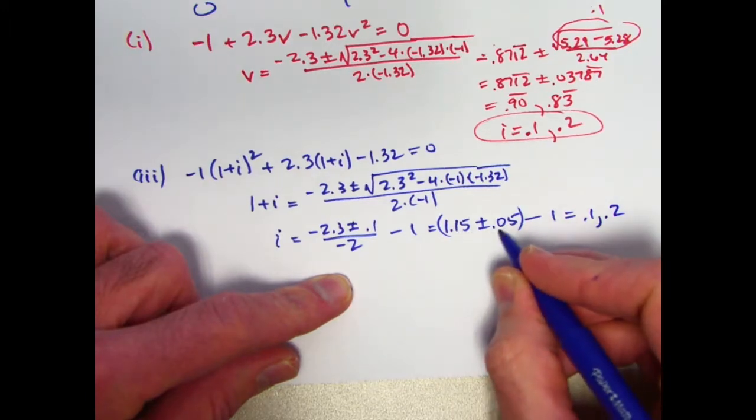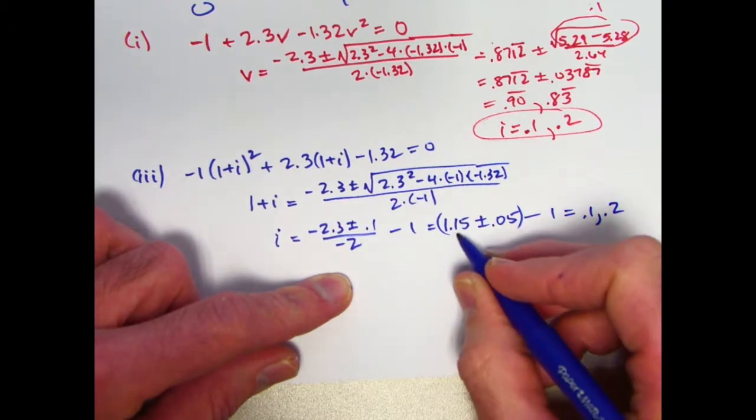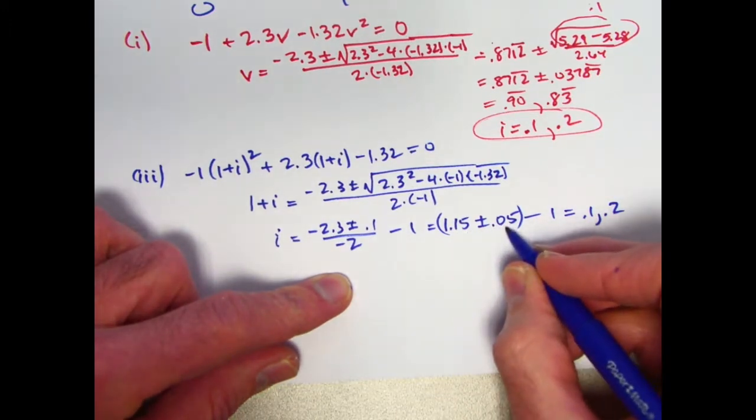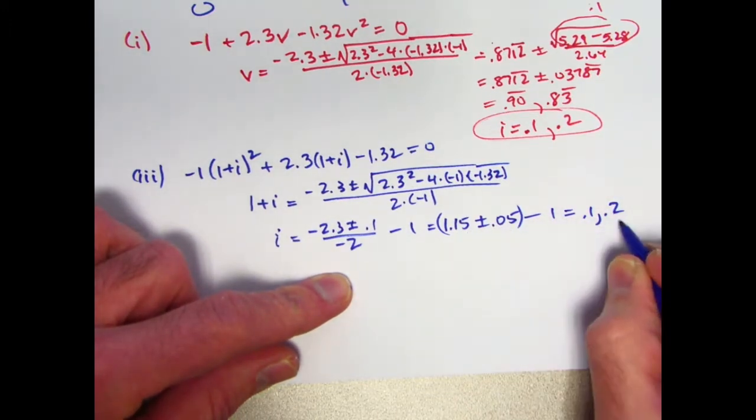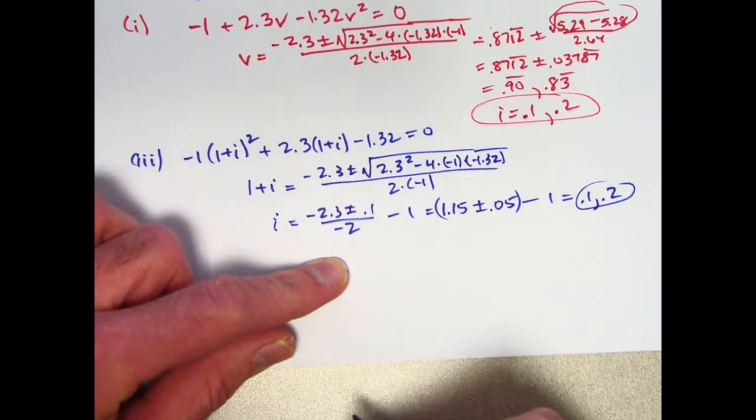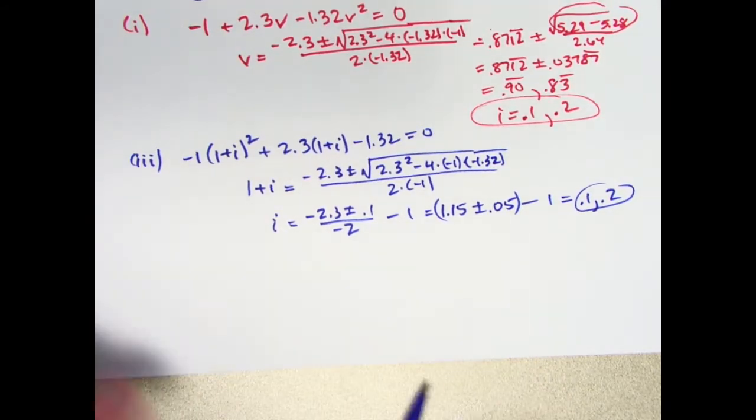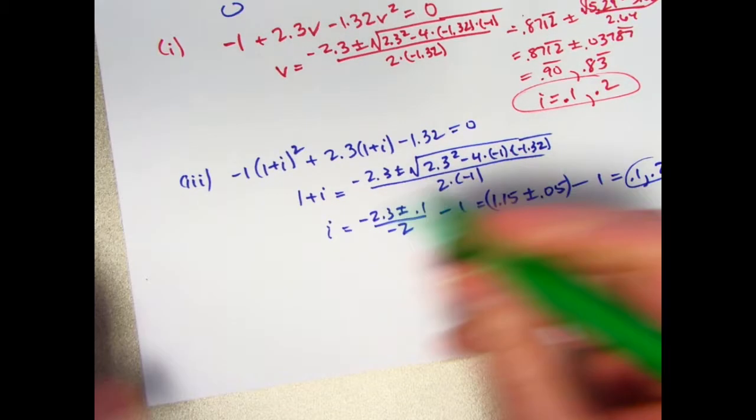And again, the negative sign doesn't matter with the second one because of the plus or minus there. Minus 1 giving us our two possible answers again, 0.1 and 0.2. Right? 1.15 minus 0.05 is 1.1. Minus 1 is 0.1. And then 1.15 plus 0.05 is 1.2. Minus 1 is 0.2. We got our two possible answers there. Same answers. Good to see that.